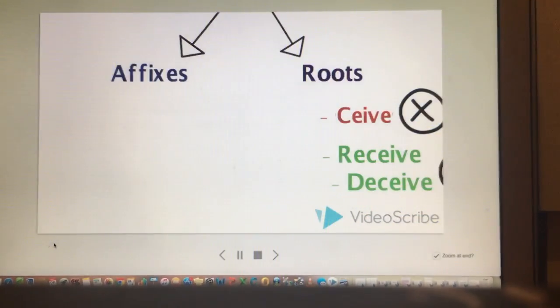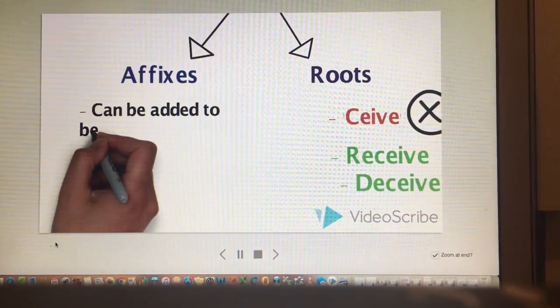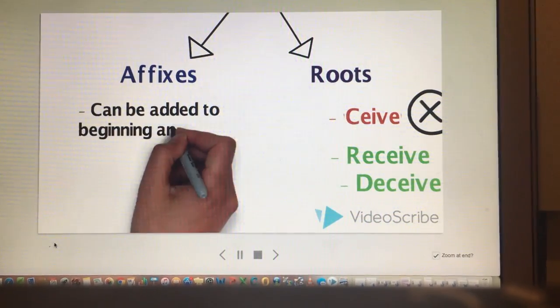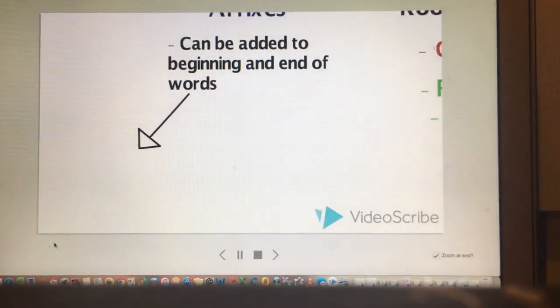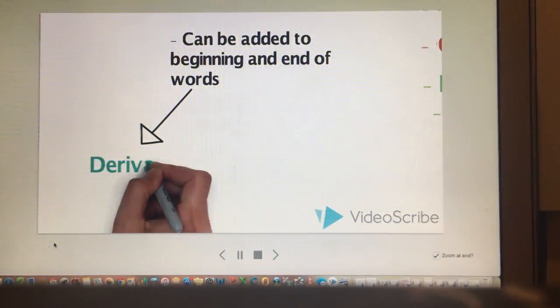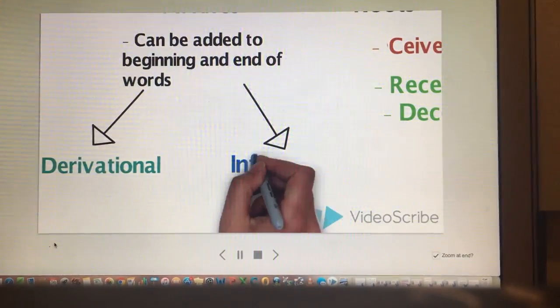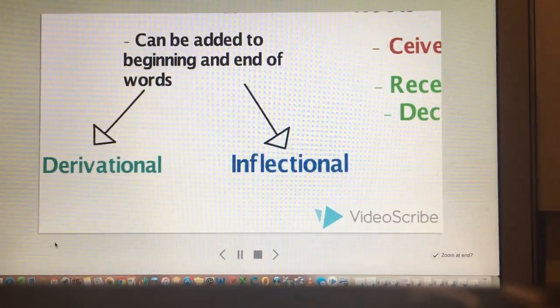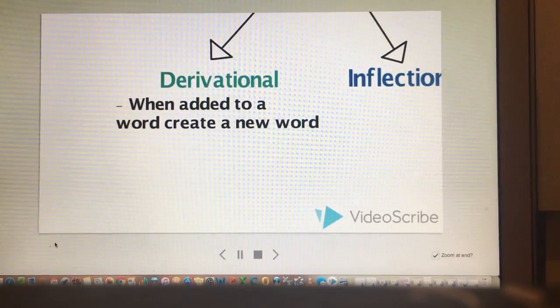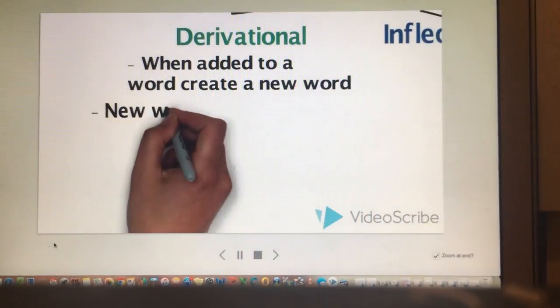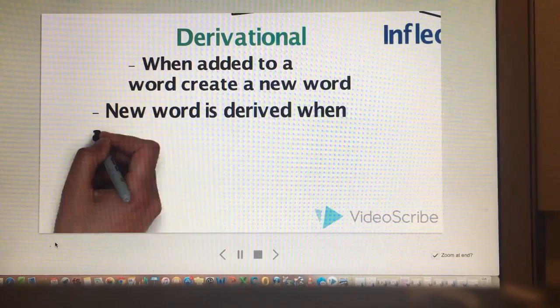Affixes are morphemes that can be added to the beginning and the end of words. They can be derivational or inflectional. Derivational affixes are affixes that when added to a word, create a new word. They are called derivational affixes because a new word is derived when they are added to the original word.